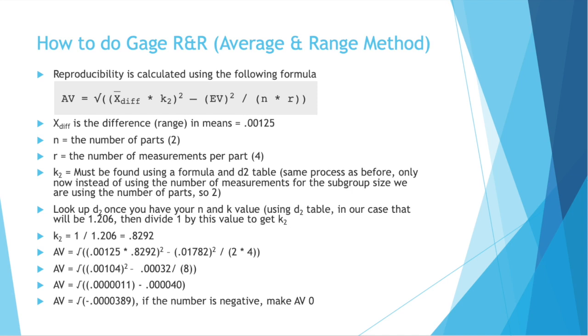Then plug that in along with your xdiff, your ev value, which is repeatability, and your n and your r, and we get an av of negative .0000389, the square root of that. But because it's a negative number, our av is zero, our reproducibility is zero.